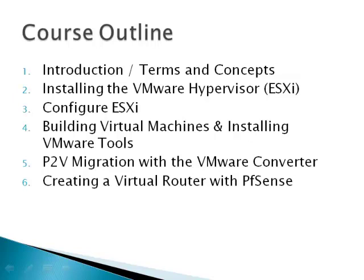Module 4 is Building Virtual Machines and Installing VMware Tools. In Module 5, we do a P2V migration with the VMware Converter. Last, in Module 6, we're going to create a virtual router with PFSense so your ESXi can be a multi-purpose host for virtual machines as well as a router and firewall.